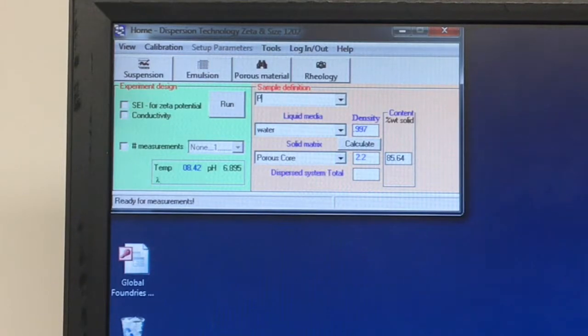Measurements take roughly 30 seconds to complete, after which time the analysis window will appear which reports the zeta potential of your system.